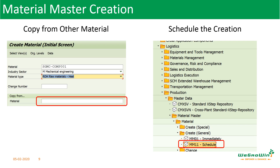We can also create the material with a schedule using MM11. It is similar to MM01, where we create it immediately. But here, using MM11, we specify what is the date and time that the material has to be created, and accordingly it will be created. So we can schedule when the material has to be created in the system.